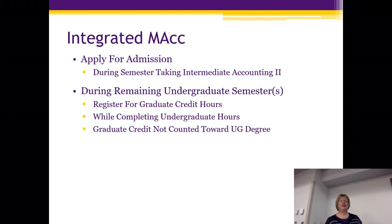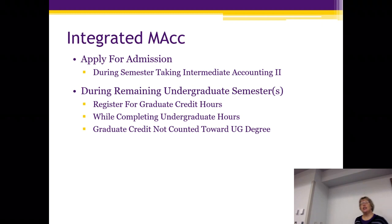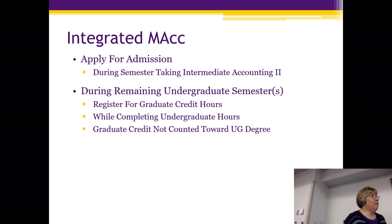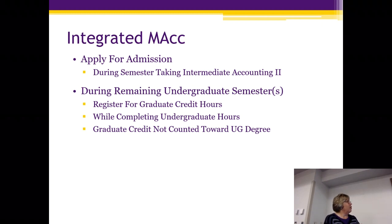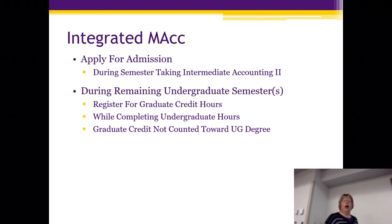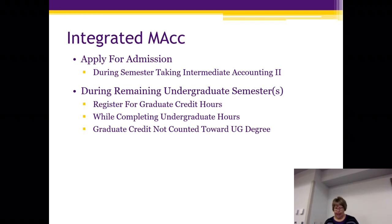Since you're all UNI students, you can do what we call the Integrated MAC — where you finish up your undergraduate requirements while you start your graduate classes. You apply for admission during the semester you're taking Intermediate 2 or after. During your remaining undergrad semesters you register for graduate credit hours, completing your undergrad, and you can actually use the CPA review to complete the undergrad requirements. Graduate credit does not count towards the undergraduate degree, partially because you still need that 150 hours.